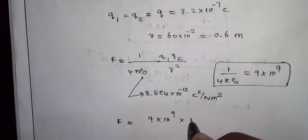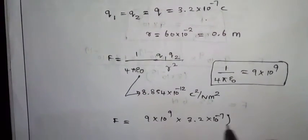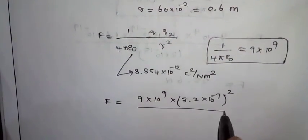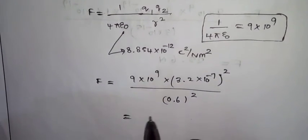9 into 10 power 9, q1 q2 is 3.2 into 10 power minus 7 whole square, by r square which is 0.6 whole square.